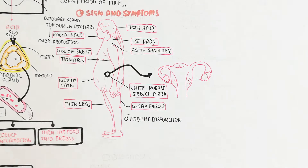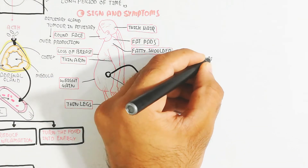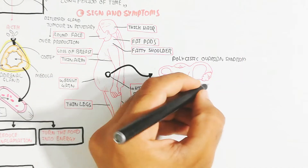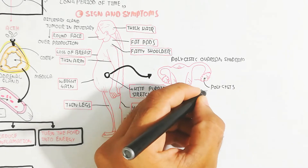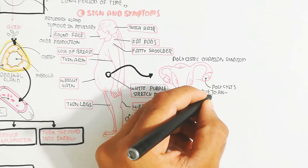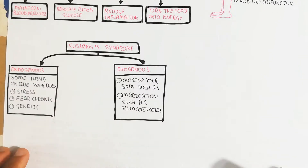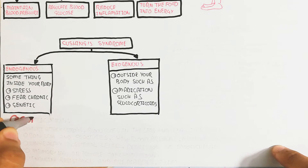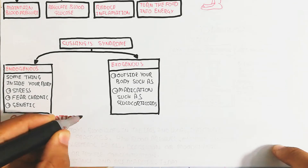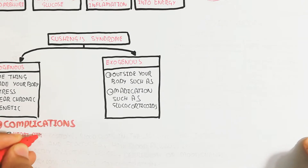Polycystic ovarian syndrome (PCOS) can also occur due to Cushing's syndrome. PCOS is interconnected with Cushing's syndrome and leads to polycystic formation due to anovulation. There are also many complications that arise from Cushing's syndrome.